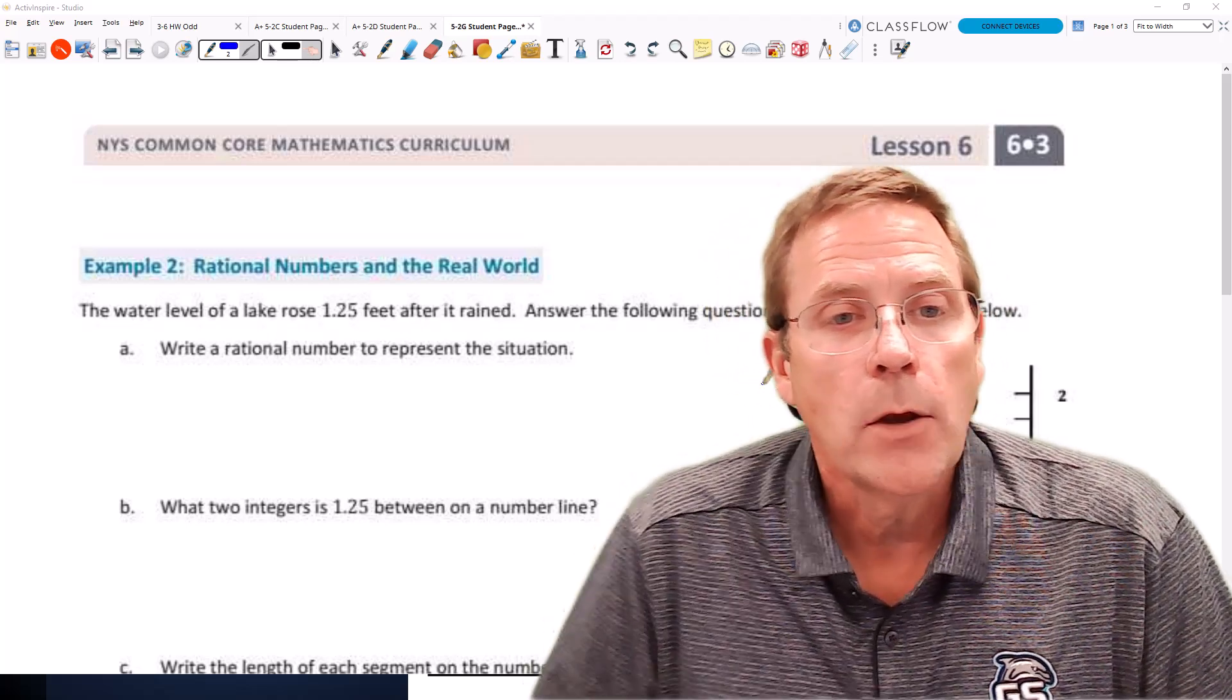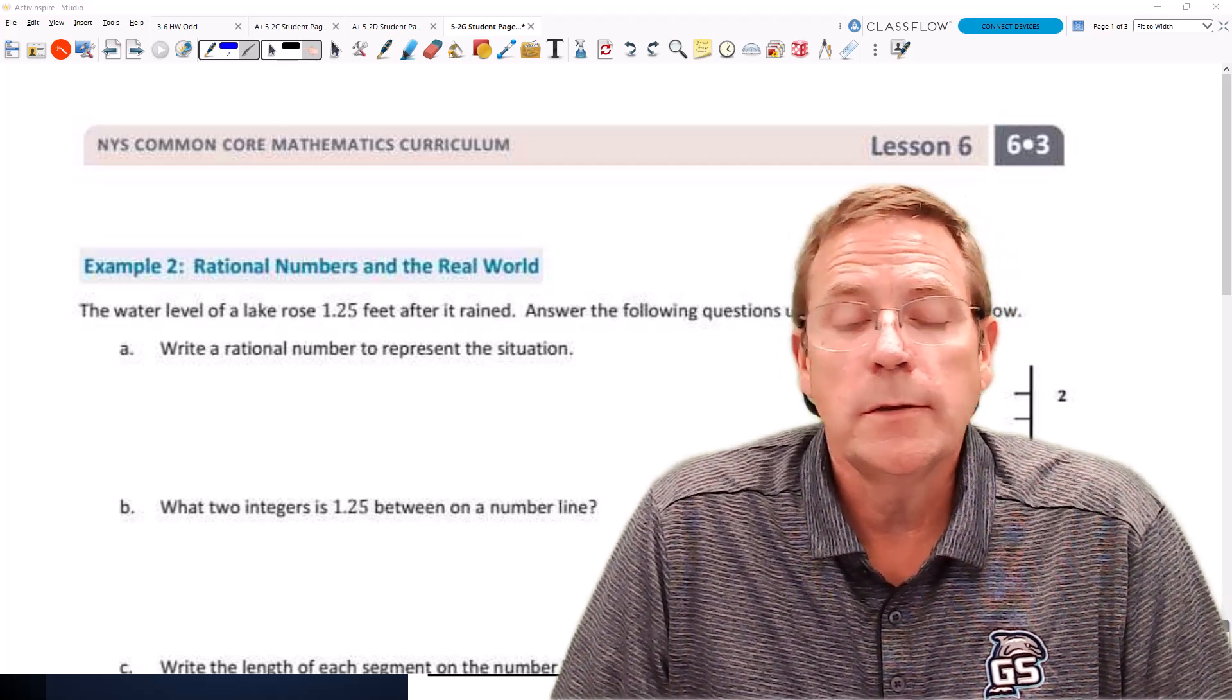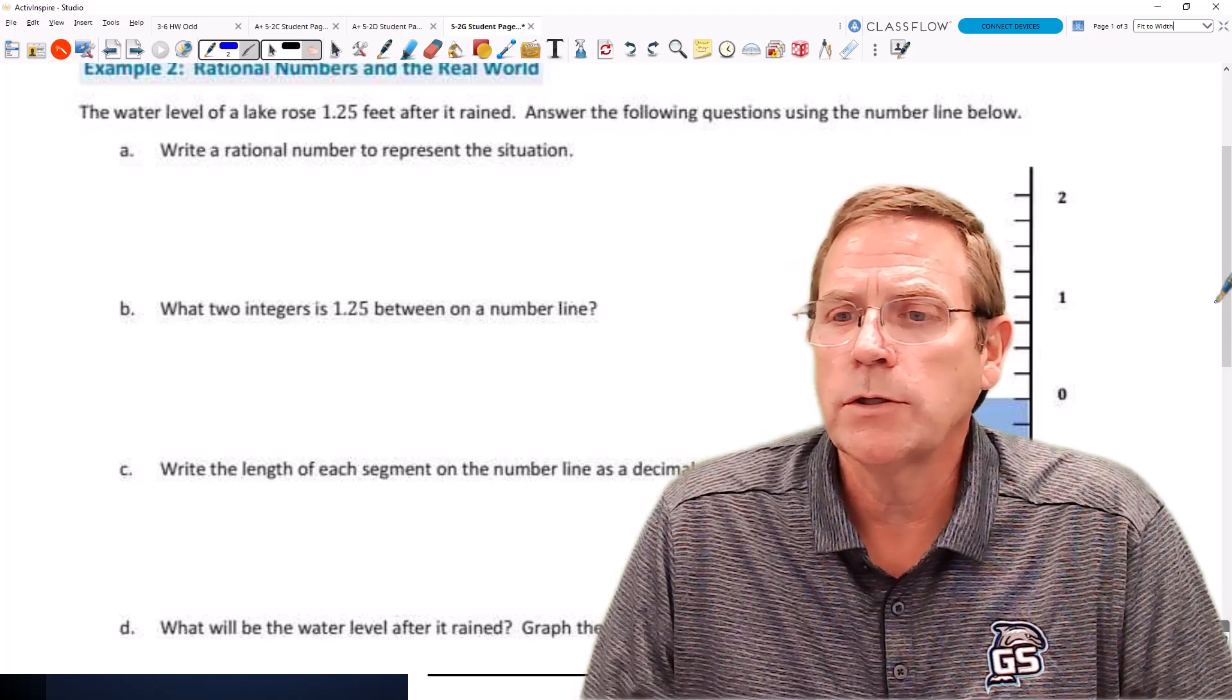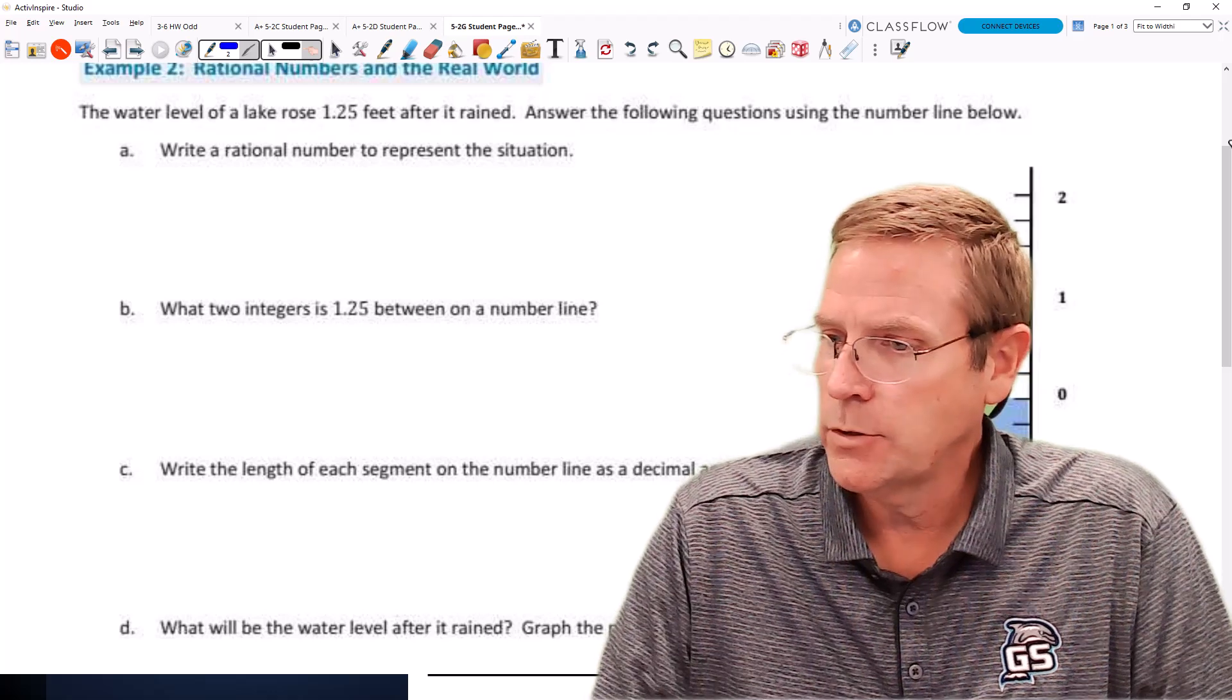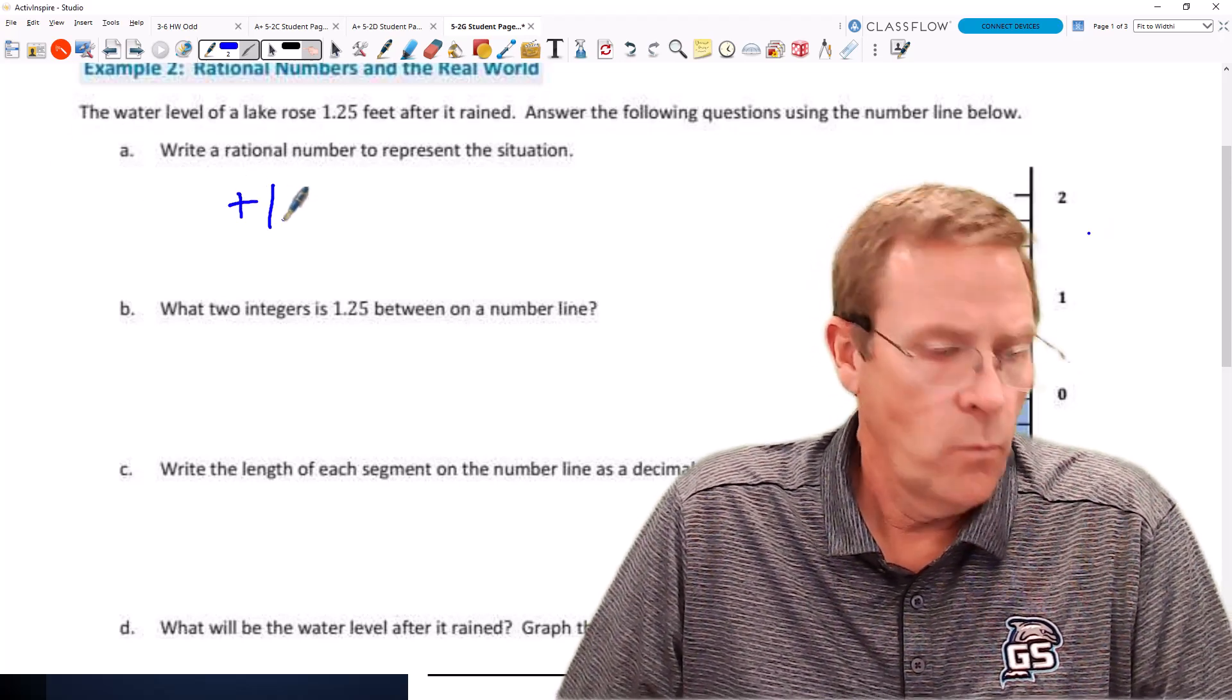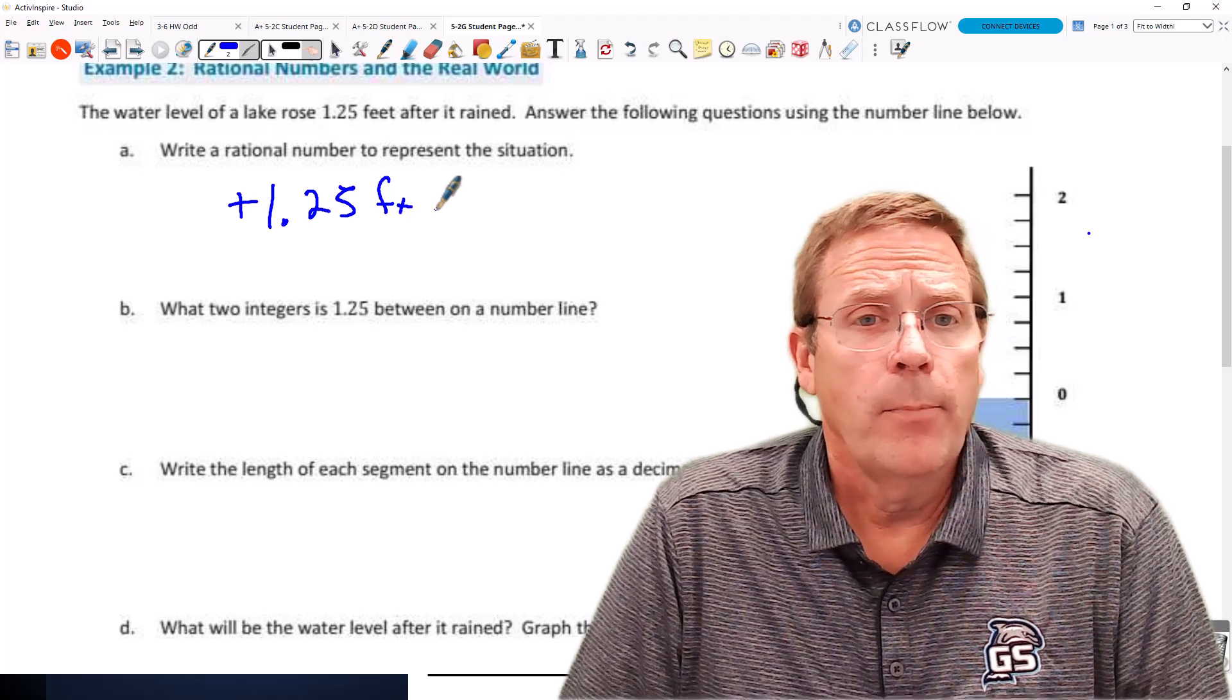It says the water level on the lake rose 1.25 feet after it rained. Answer the following questions using the number line below. First off, it says to write a rational number to represent the situation. That rational number is going to be a positive 1.25 feet, because it rose 1.25 feet.